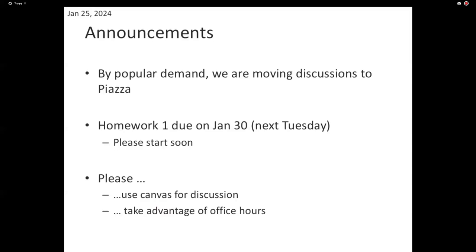There's Homework 1 that has been available on Canvas for a while, and it's due next Tuesday. If you haven't started already, please start soon. You'll be implementing decision trees and playing with some variants. Use Piazza for discussions, and do come to office hours. As I said in the last lecture, this is the first homework, so you might have weird complications you didn't think about. Start early, and if you have trouble, come to office hours.